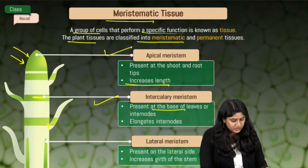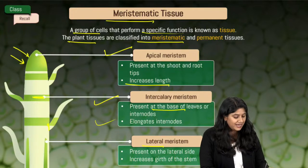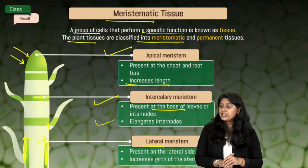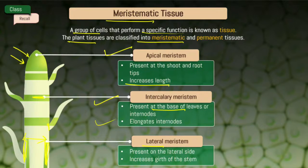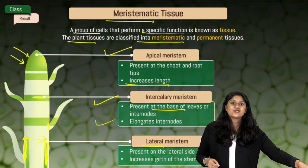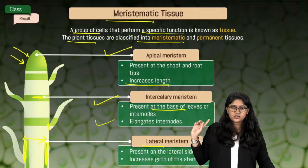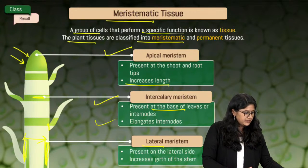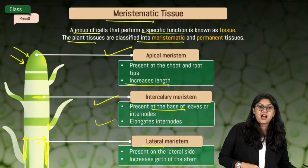Intercalary meristem helps in elongating the internodes. Last but not the least, we have the lateral meristem present on the lateral side, which helps in increasing the girth of the plant. Please take a screenshot of this — it's a very quick summary. Intracellular spaces are absent in meristematic tissues.